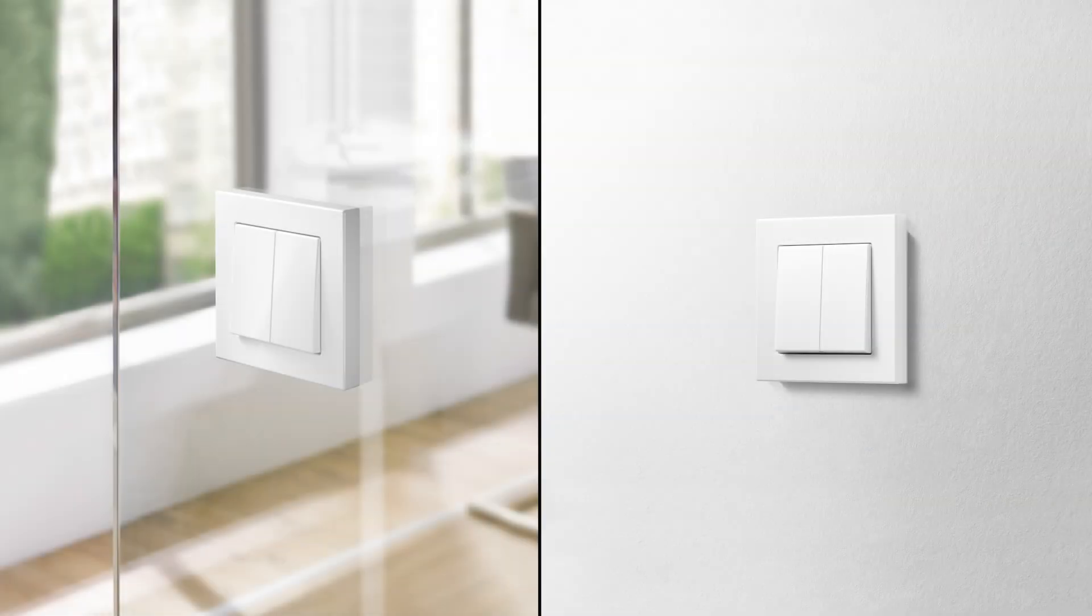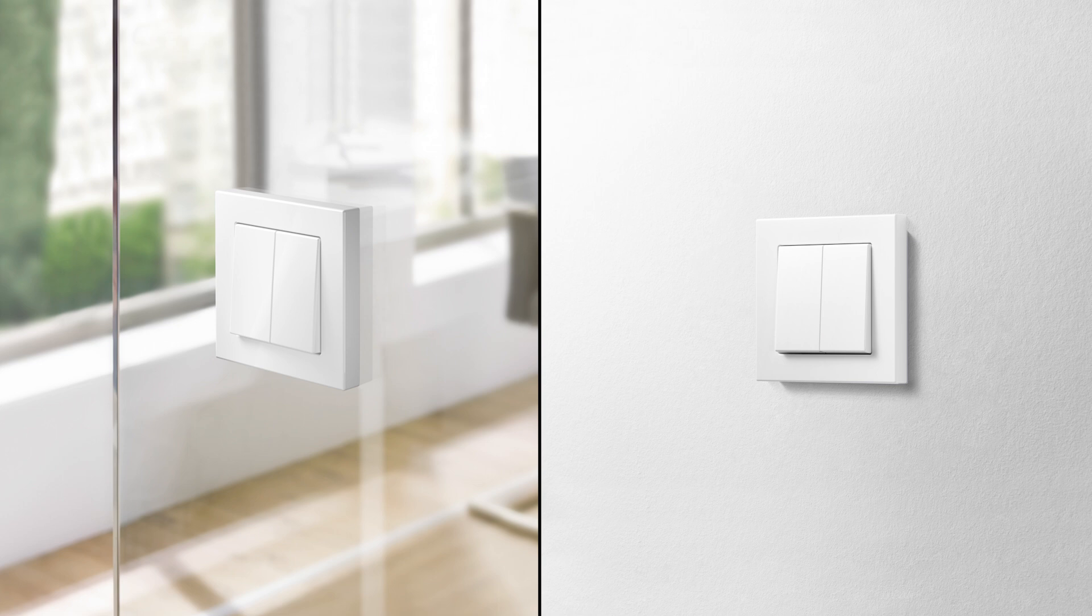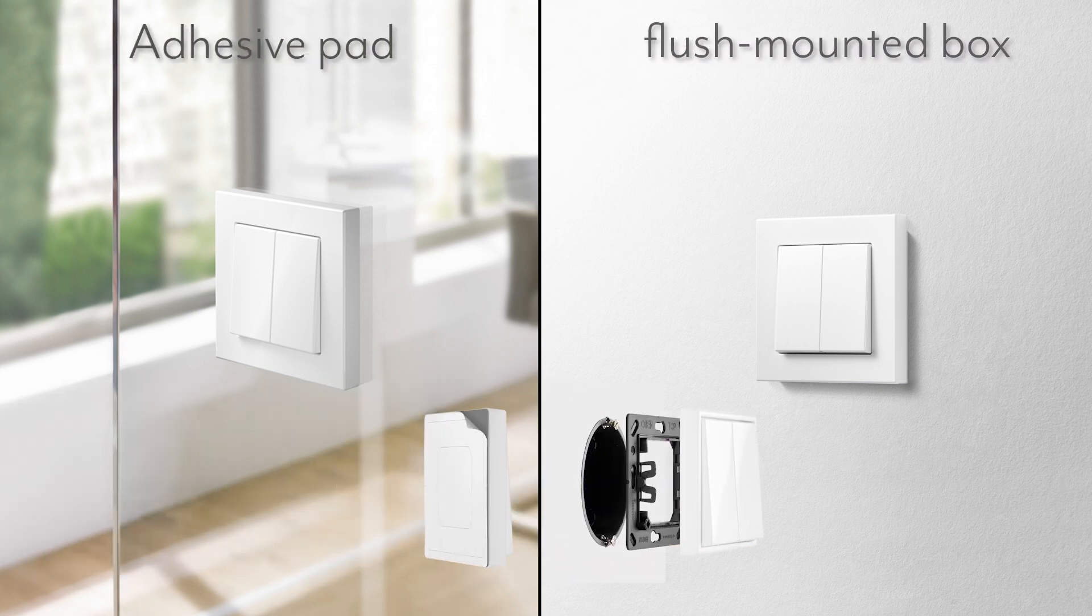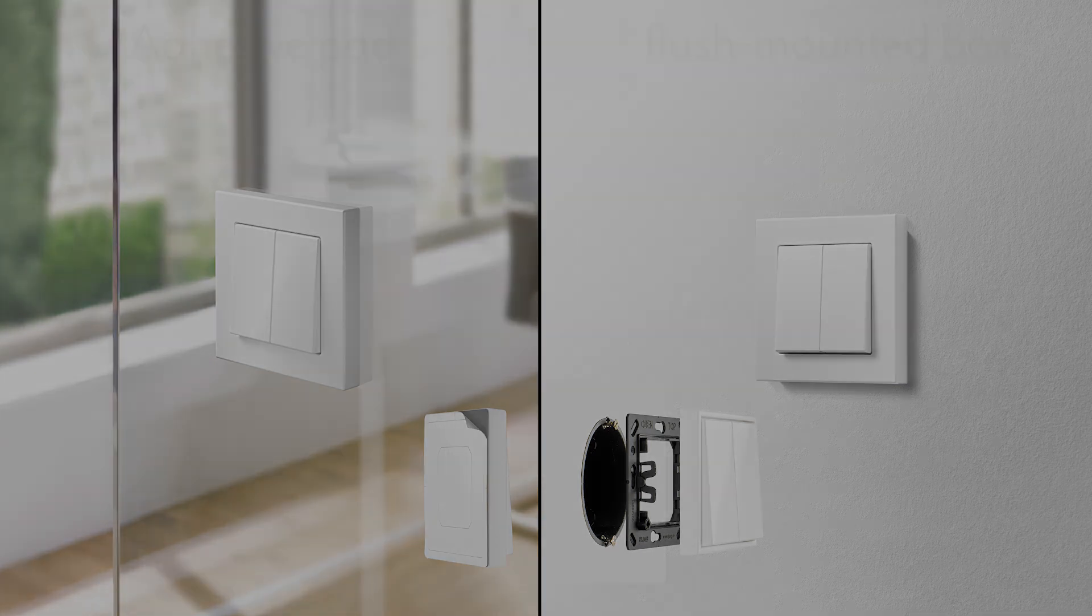The Jung META push button is battery operated and not tied to a fixed power source. It can therefore be installed almost anywhere without cabling. There are two ways to mount the META push button. Either using the supplied adhesive pad or in the classic way on a flush mounted box. Both variants are explained in the following.